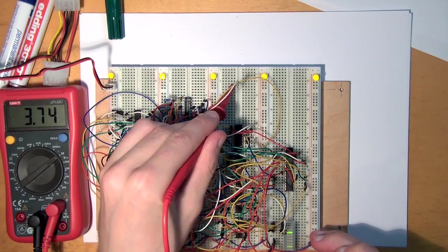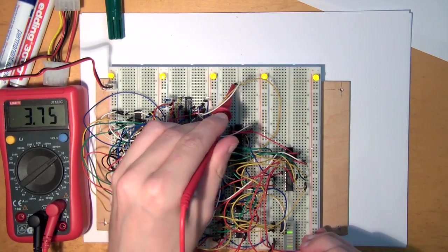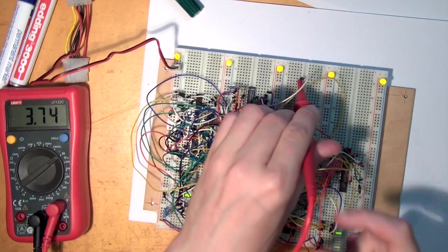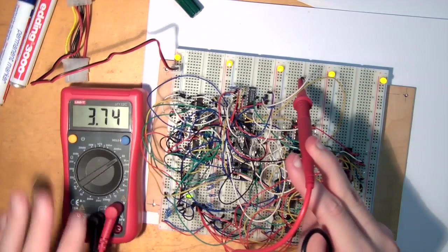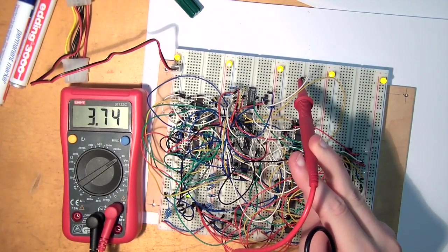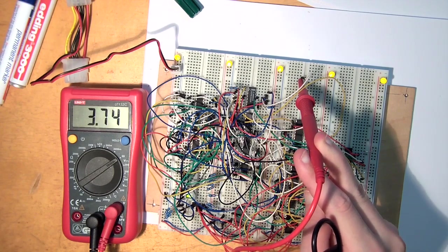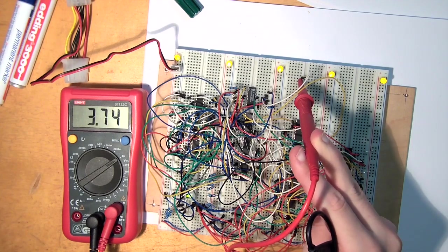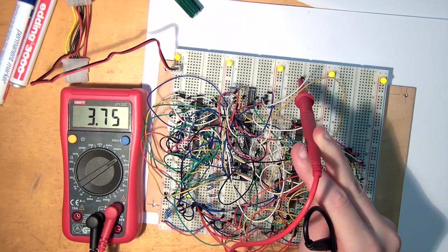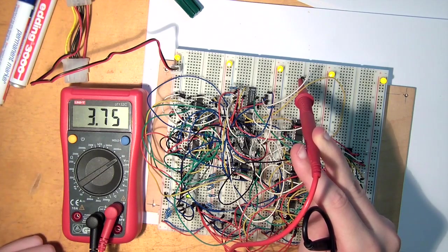And now we can actually measure this voltage. Okay, so now we see, it's actually 3.7. So 3.7, that is high enough. 3.7 is actually in our range that would be accepted by a CMOS as being a high, as being a 1.